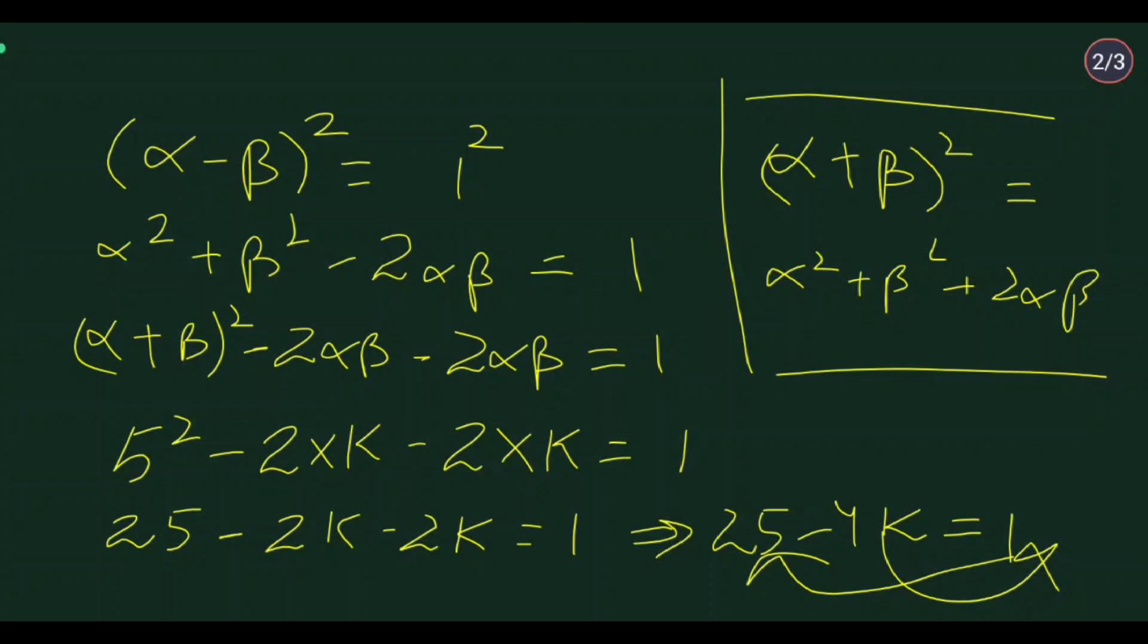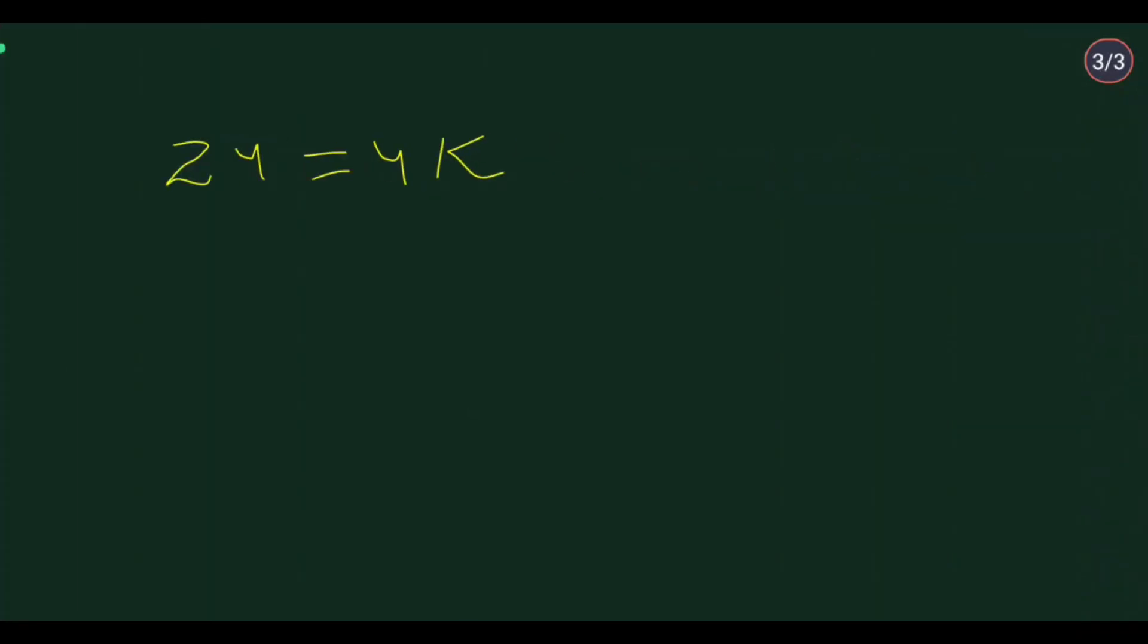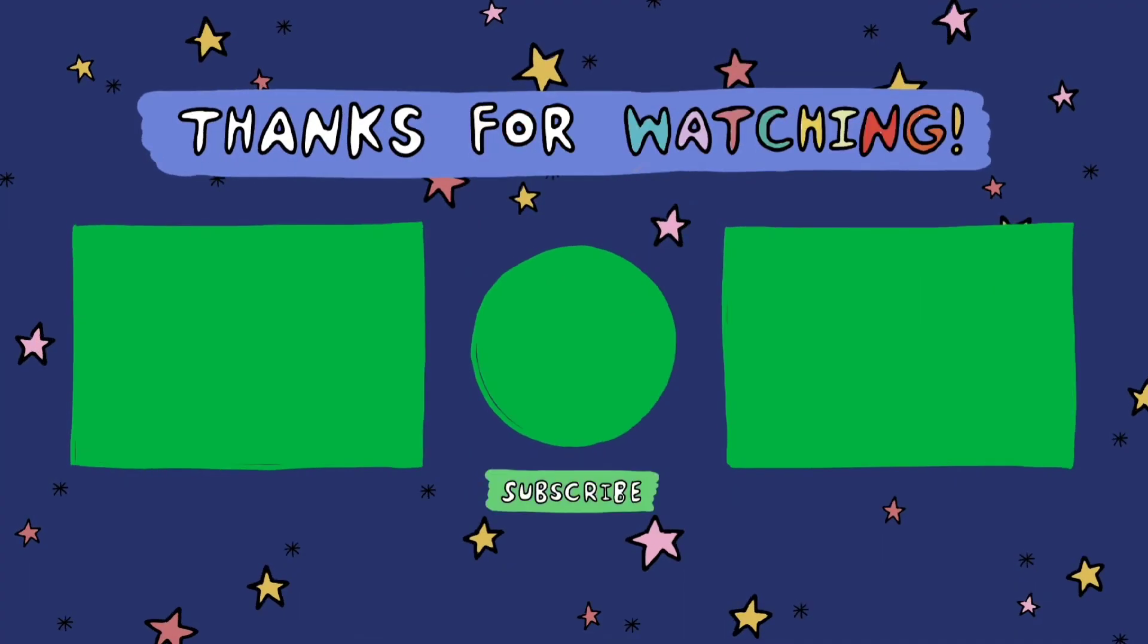So the value of k is 6. I hope you understand this method and this question. Please comment and tell us if you understood, and subscribe the channel for more such videos. Thank you very much.